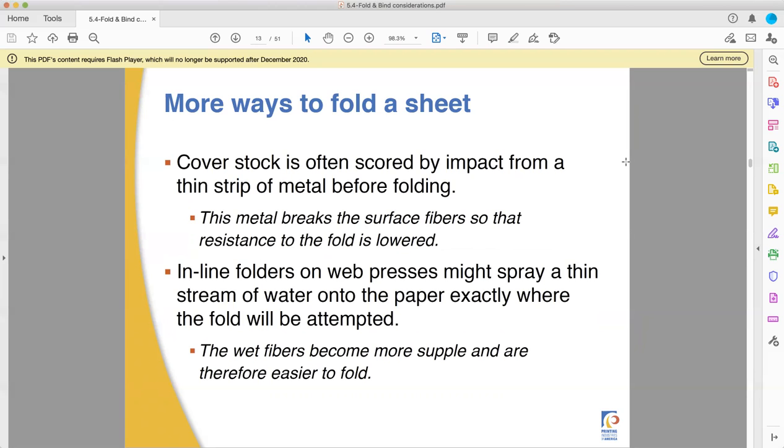So there's more ways to fold a sheet. Cover stock oftentimes needs to be scored by something like a big impact first to compress the paper, make the fold easier. Things like greeting cards is the best thing to think of because they're made out of card stock and they're folded. And they always have a little bit of a rounded edge to the part that folds, don't they? When you look close at a Hallmark or other brand card, those cards have been creased by an impact first. And that breaks the surface fibers and makes it easier to fold. Web presses sometimes spray a little bit of water onto the paper to help it to fold. It makes the water soft so you can fold it better.